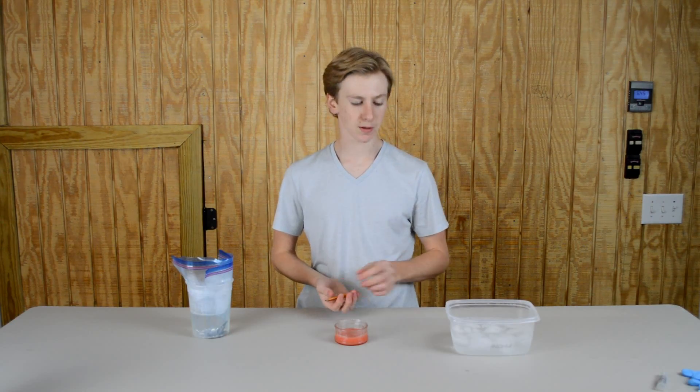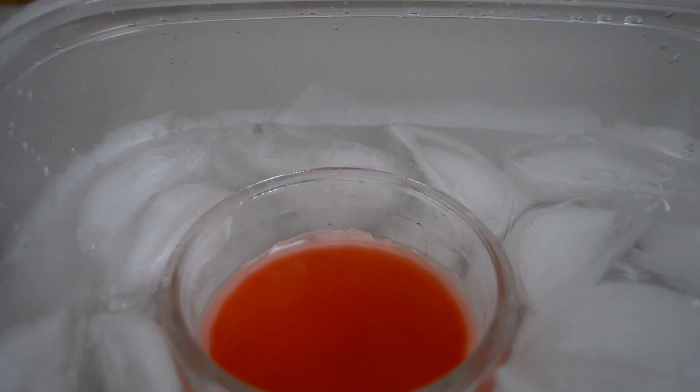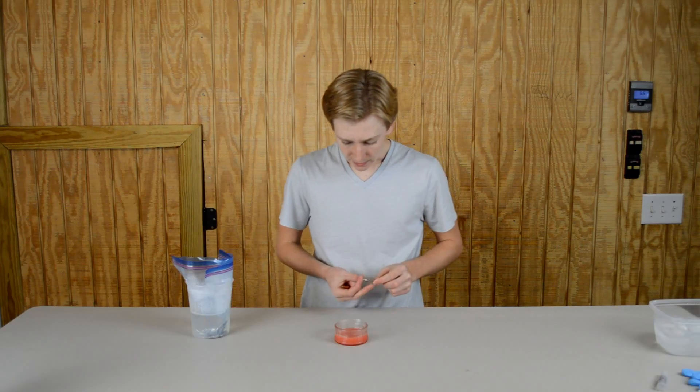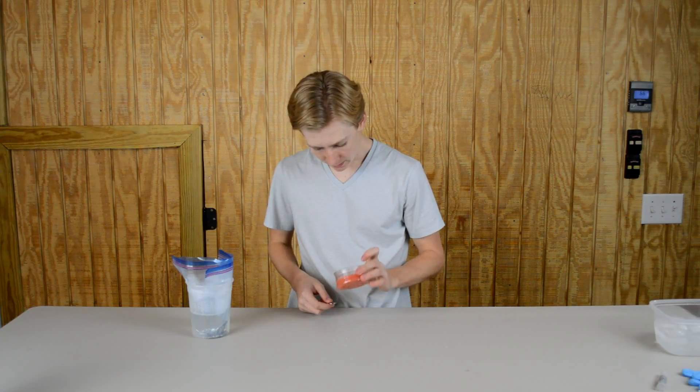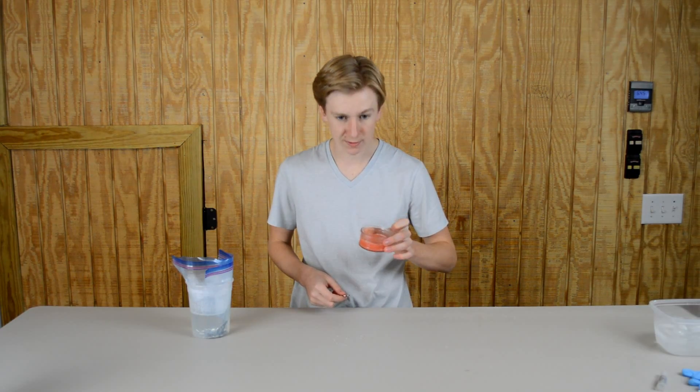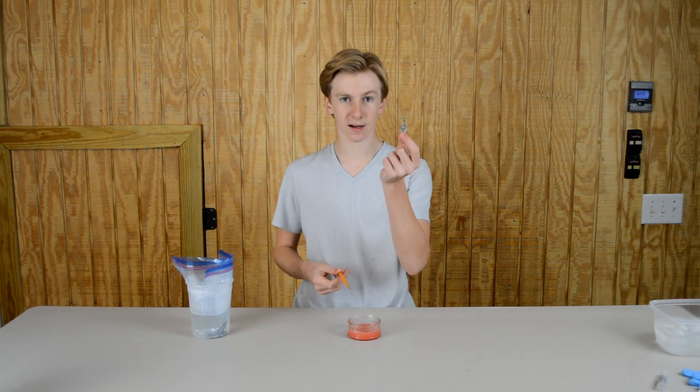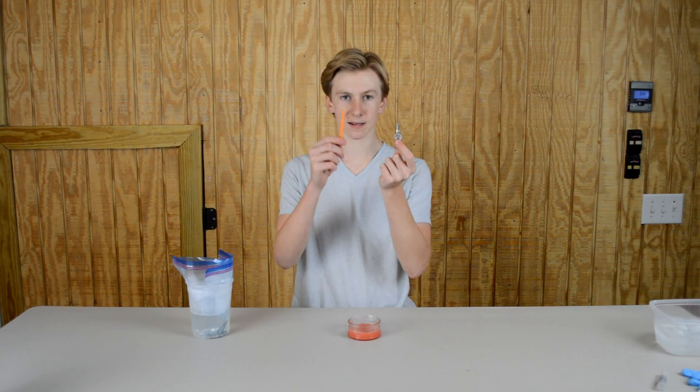So I put the wax in some ice water so that it would harden quicker to where I can actually put the objects in. Now it's mostly hard, as you can see it doesn't fall, but it is a little slushy. So the things we're going to be making are a small key and a pencil.